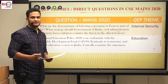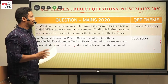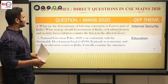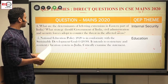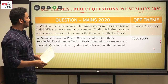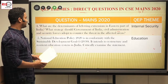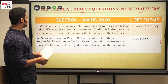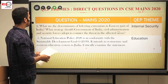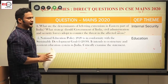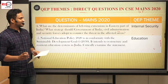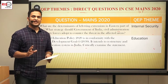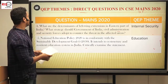Sir had given model question answers for internal security and the next question came from that model answer: 'What are the determinants of left-wing extremism in the eastern part of India and what strategy should the government, civil administration, and security forces adopt to counter the threat?' This was a 15-marker question. The specialty of the internal security booklet was that enough maps were given in terms of left-wing extremism, which came in handy.